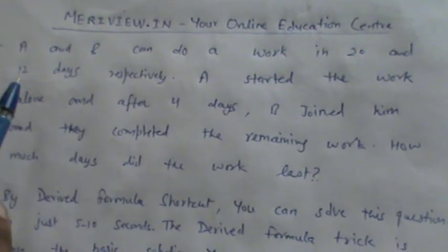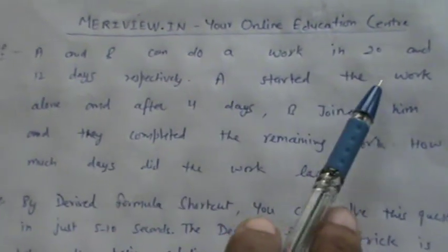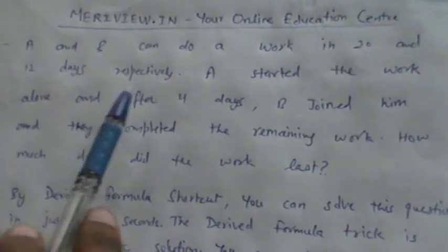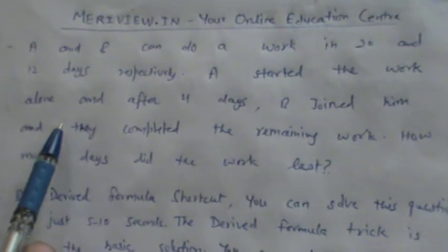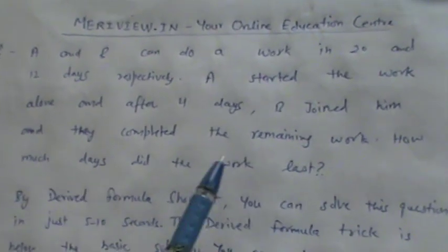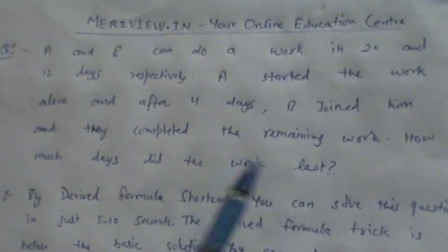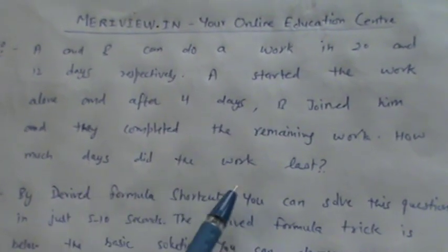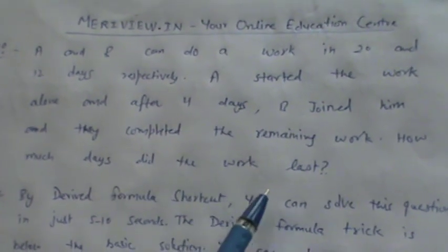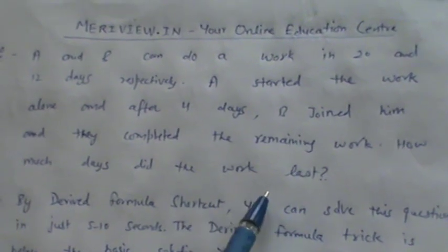The question is of this type: A and B can do work in 20 and 12 days respectively. A started the work alone and after 4 days B joined him and they completed the remaining work. How many days did the work last? We have to determine how many days did the total work last.